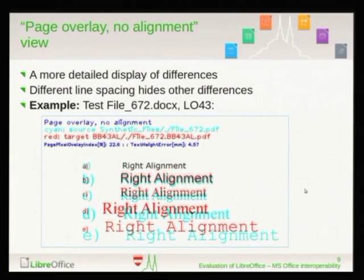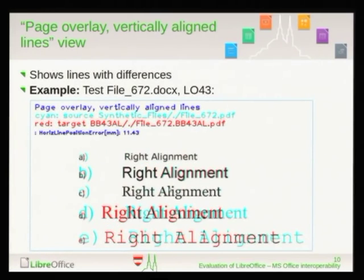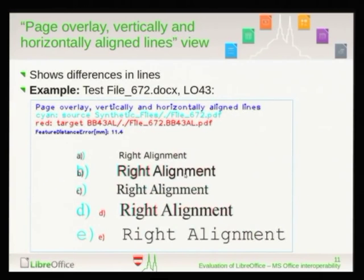Then we align vertically: in this view the line spacing differences vanish and we have nicely aligned lines. We can see that the position of some elements is correct while others are not. We see differences in the letters. Then the last view is aligned according to the dominating part of the document — correlation of the lines is computed. Here we see something new which was not visible before: even within a line, there are position problems. The word 'alignment' is fine but the word 'right' is shifted a little bit.